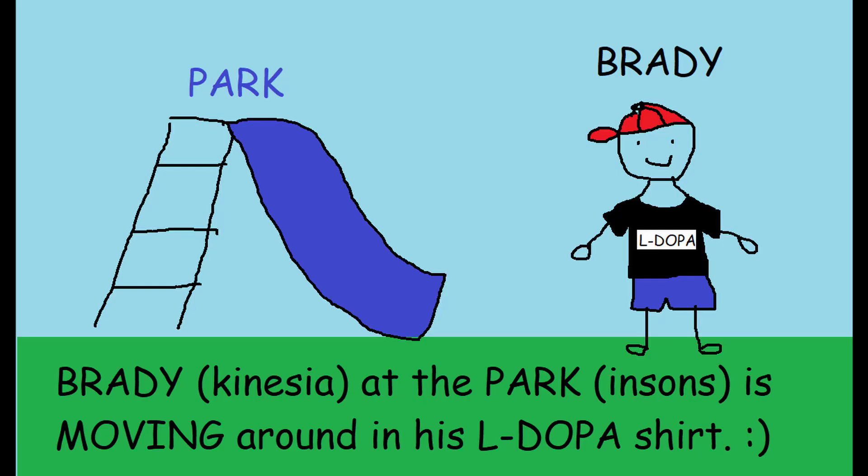I just finished editing this video and then thought of this very silly mnemonic device. So I decided to add it really quickly. So here is Brady who is at the park and he's moving around running around in his L-DOPA shirt. So bradykinesia is slow movement. We have Parkinson's for park and Brady is wearing his L-DOPA shirt. So we take L-DOPA medication to support our slowed down movement that happens because for Parkinson's, our dopamine production decreases making movement harder.